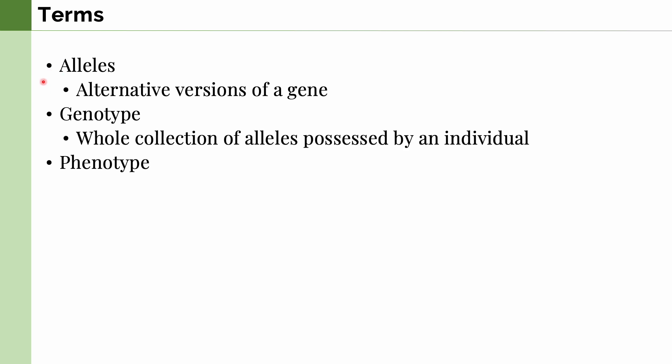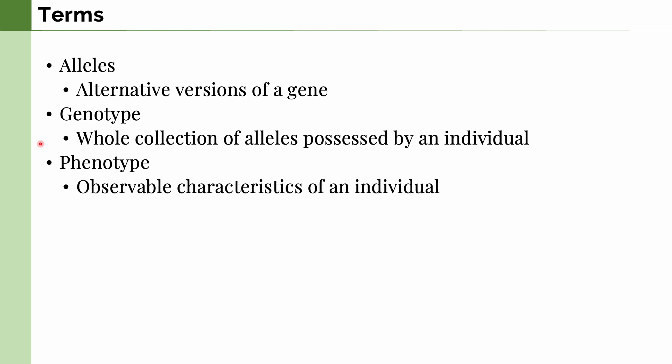Next, we have genotype, which is the whole collection of alleles possessed by an individual. And lastly is phenotype, which is the observable characteristics of an individual.